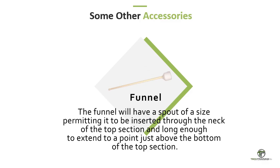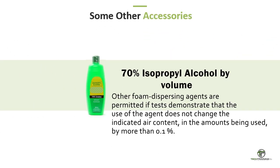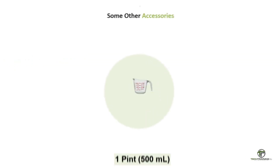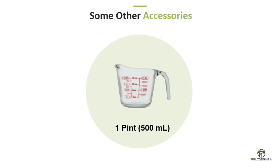Other accessories include a funnel with a spout permitting insertion through the neck of the top section, long enough to extend just above the bottom of the top section. The discharge end shall minimize disturbance of the concrete when water is added. We also need 70% by volume isopropyl alcohol — other foam-dispensing agents are permitted if tests demonstrate they do not change the indicated air content by more than 0.1%. For the isopropyl alcohol, we need a measuring device with a minimum capacity of at least one pint or 500 milliliters, with graduations not larger than 4 ounces or 100 milliliters.